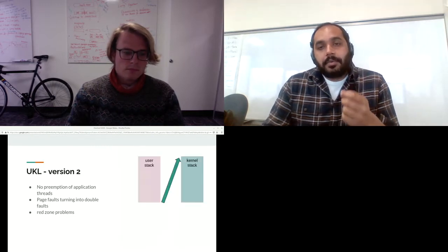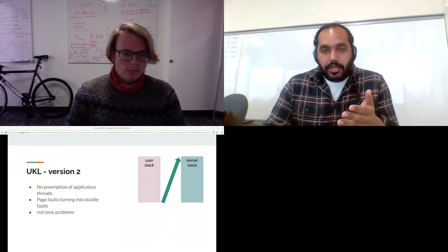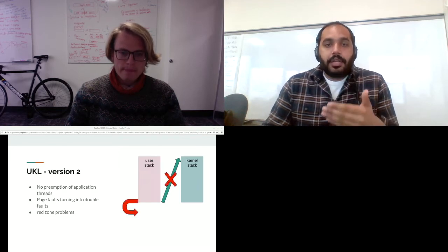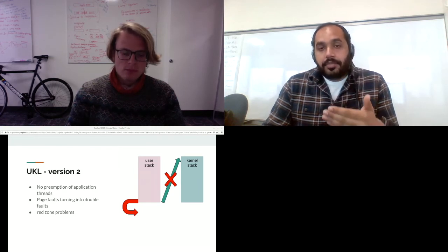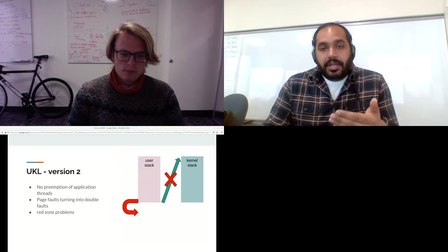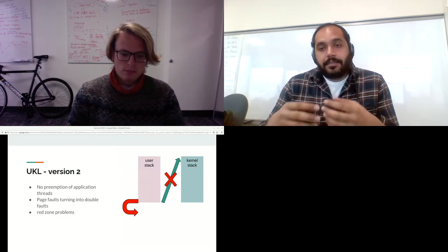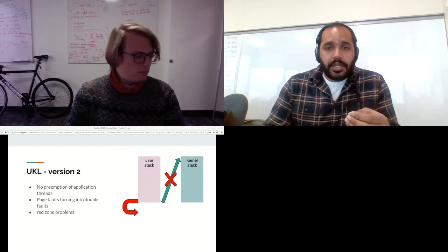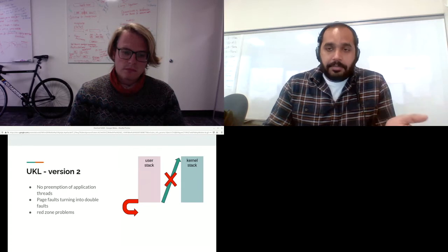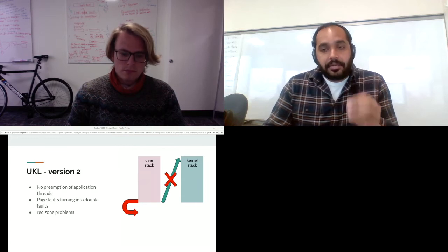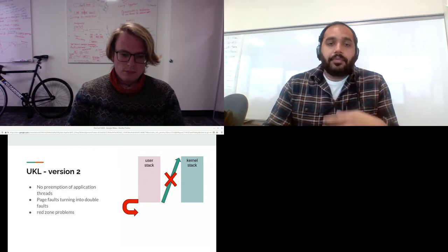The other problem we fixed was that some page faults resulted in double faults. Normally when a page fault occurs, you jump to a kernel stack to service that fault. The switch never occurred in UKL because no ring transition ever happened — so if we got a page fault because we ran out of user stack, there would be no stack left to service it and that would result in a double fault. We fixed that by using IST, the interrupt stack table. Through IST we can have seven per-CPU exception stacks to jump to irrespective of whether a ring transition occurs. We created a new exception stack and changed the page fault entry in the IDT so any page fault would have a fresh stack.